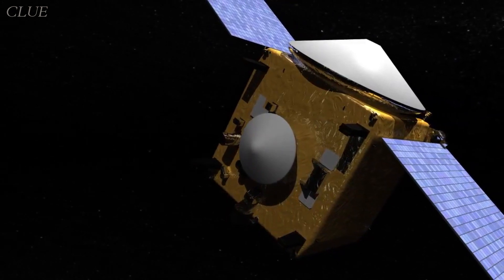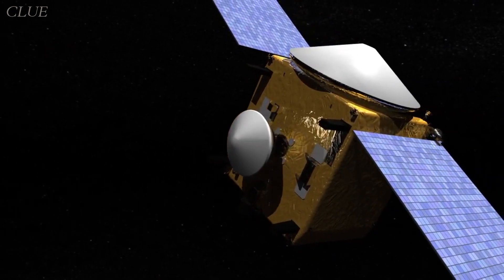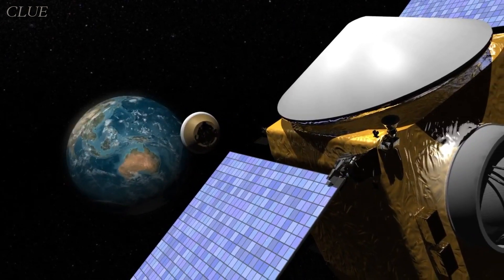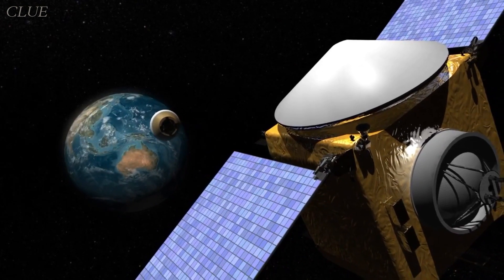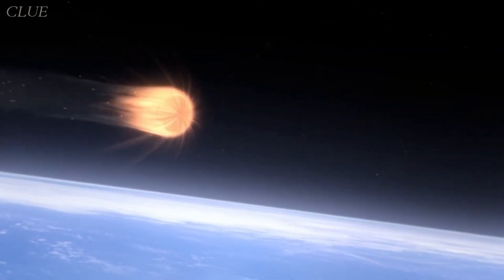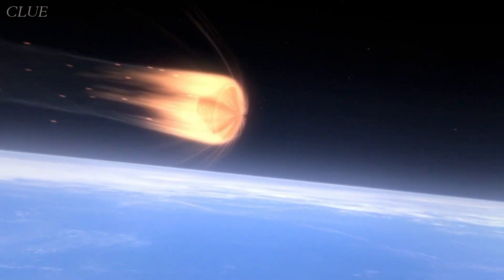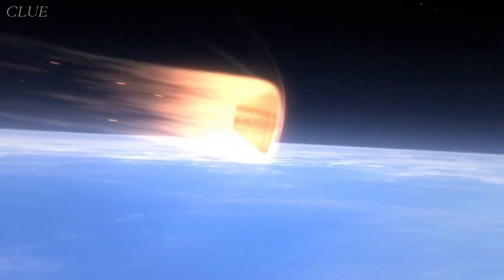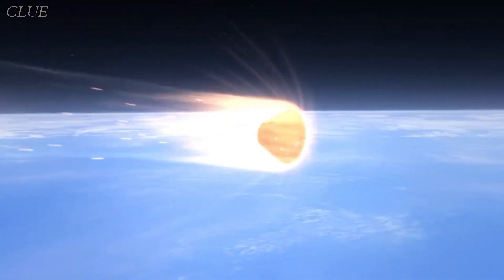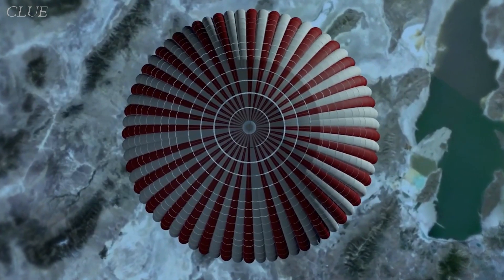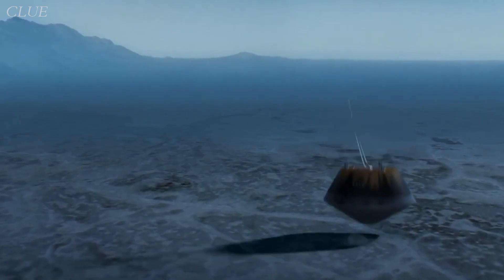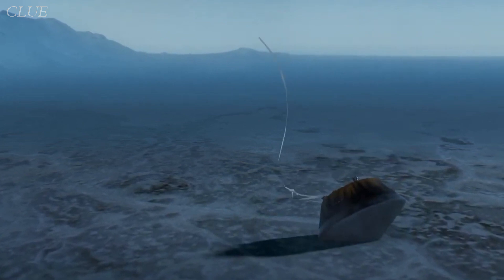On September 24, 2023, at a distance of 101,000 kilometers from our home planet, the spacecraft released the sample return capsule into the vast expanse. As it re-entered Earth's atmosphere, it blazed like a comet at a jaw-dropping speed of 44,500 kilometers per hour. The capsule parachuted down and touched the Earth at the Utah test and training range.